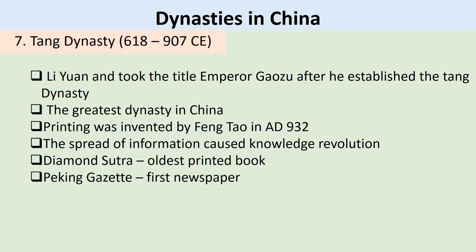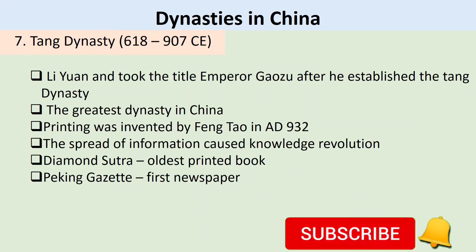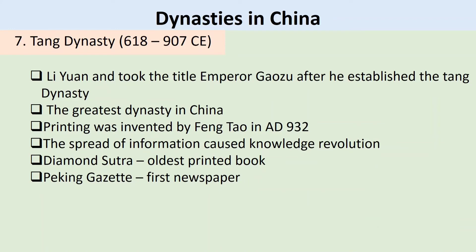Tang Dynasty, from 618 to 907 CE. The Tang Dynasty was founded by Li Yuan after he revolted against the Sui Dynasty, and he took the title Emperor Gaozu. The Tang Dynasty is considered the greatest dynasty to rule in China, and perhaps the mightiest in the world, because Europe at this time was plunged into the Dark Ages after the fall of Rome.